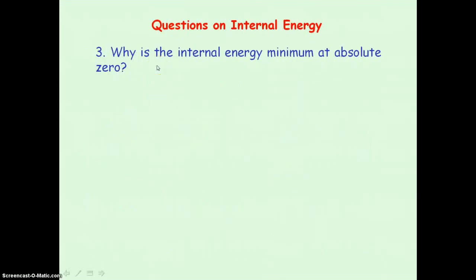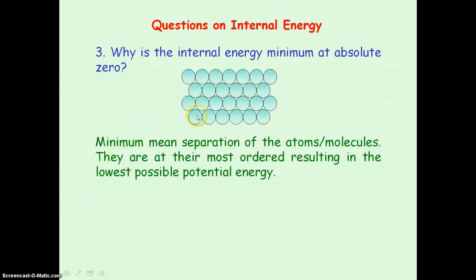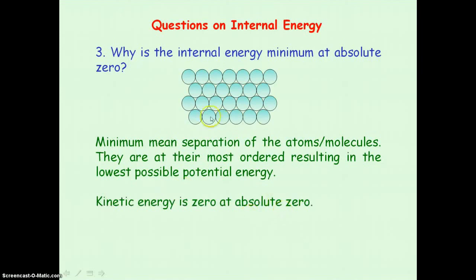The final question is: why is the internal energy at a minimum at absolute zero? At absolute zero, the mean distance of separation between the atoms or molecules is at a minimum, so the potential energy is at its lowest possible value. Also, at absolute zero, the atoms or molecules will not be moving, so the kinetic energy will be zero. Since the kinetic energy is zero and the potential energy is at a minimum, the internal energy is at a minimum.